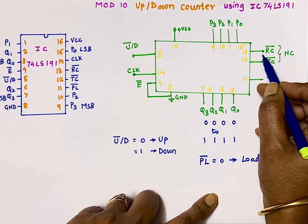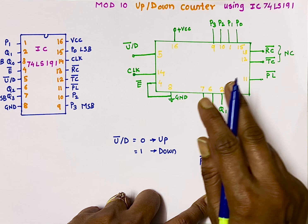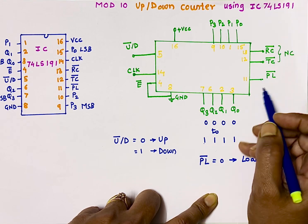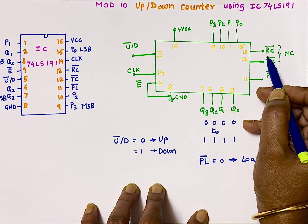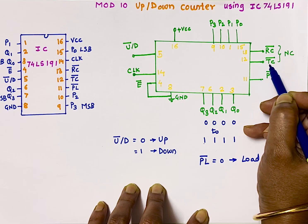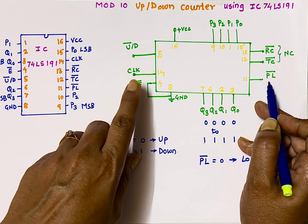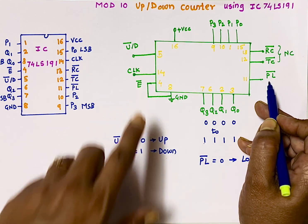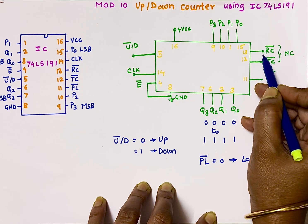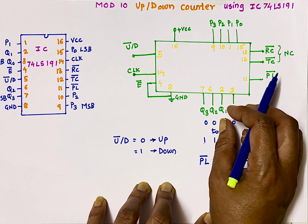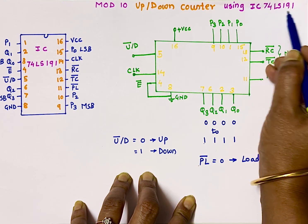Pin number 13 is the ripple clock. The ripple clock output is used for cascading multiple IC 74191s. When the terminal count is high and enable is low, the ripple clock output will follow the clock input and propagate the clock to the next IC.